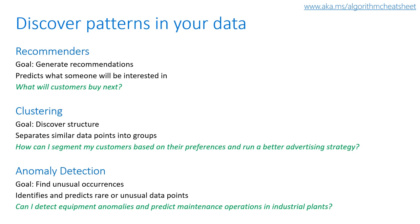You can also use machine learning to discover patterns in your data. Here we have three different types of methods: recommenders, which are great at predicting what someone will be interested in the future; clustering, which is great at separating similar data points into groups; and finally, anomaly detection, which is great at identifying and predicting rare or unusual data points.